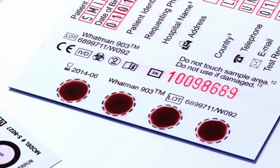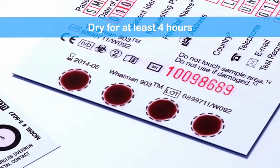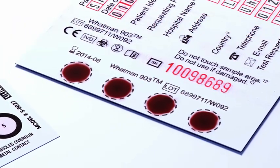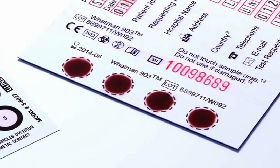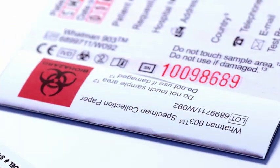To preserve enzyme activity, samples must be dried at room temperature for at least four hours, away from direct heat or sunlight. To avoid cross-contamination, do not stack cards. Cover samples with the attached paper flap after they are dry.